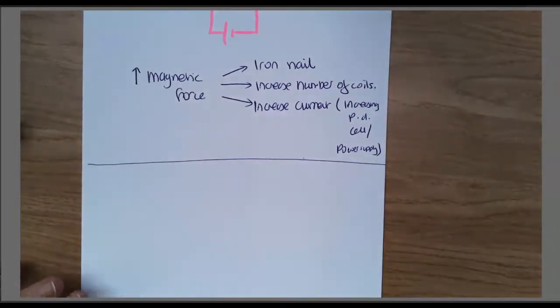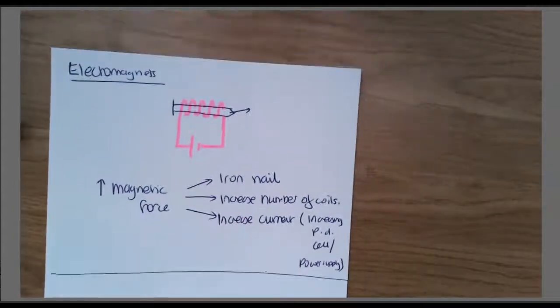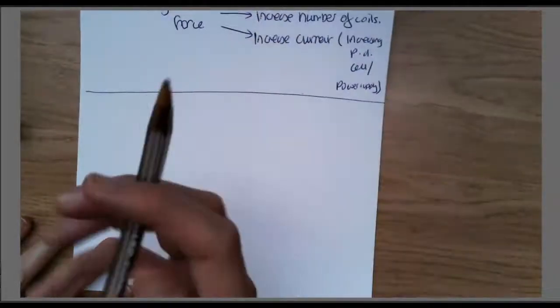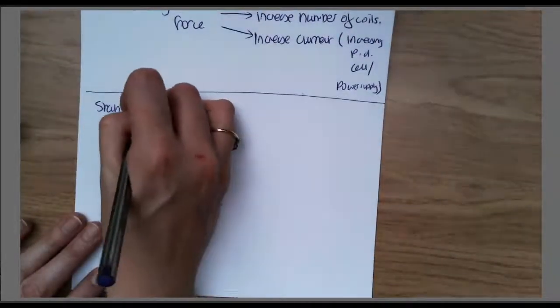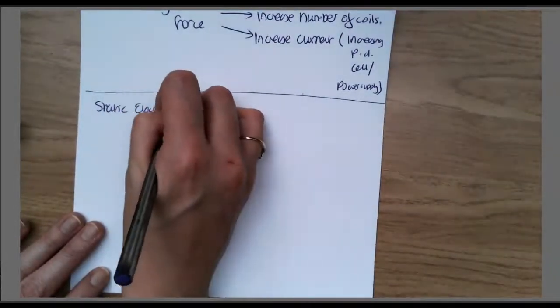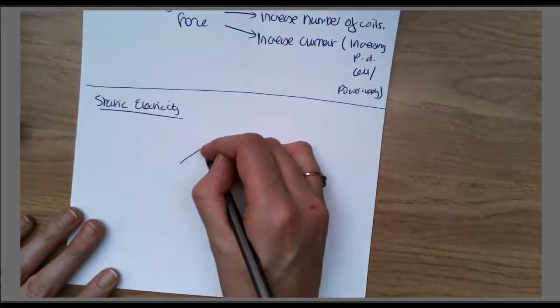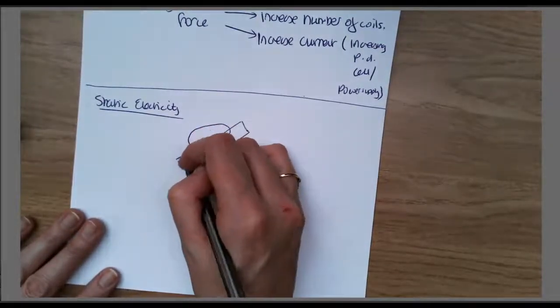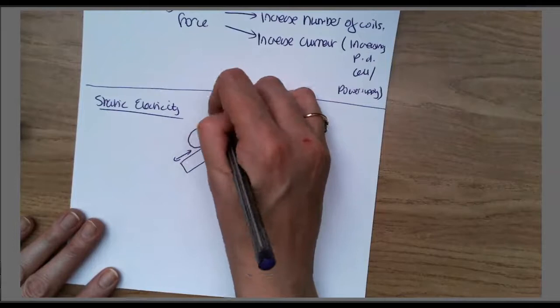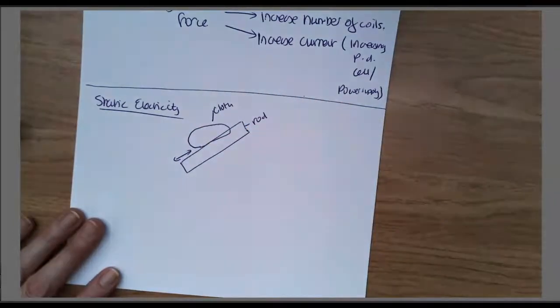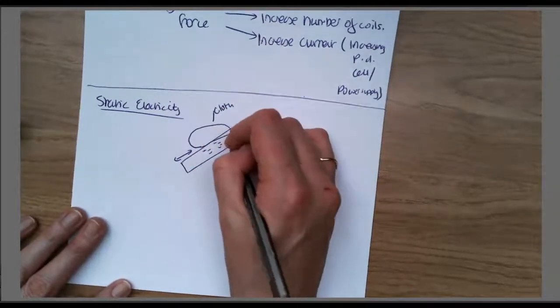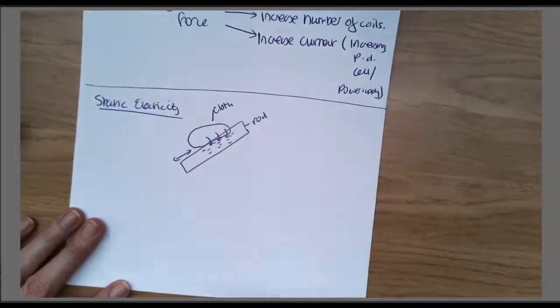We're going to look a little bit at electricity now. Let's look at static electricity first. In static electricity, what we did in the lesson was we had a rod and we rubbed the rod with a cloth.